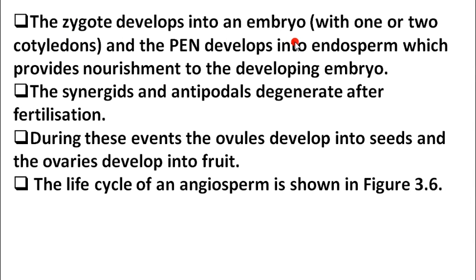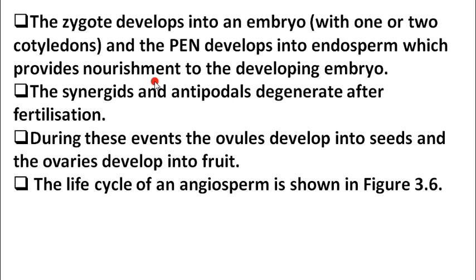The zygote develops into an embryo with one or two cotyledons. The PEN develops into the endosperm, which provides nourishment to the developing embryo. So there is coordination between the two: the endosperm nourishes the developing embryo. After fertilization, the synergids and antipodals degenerate — their work is done.